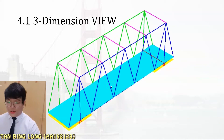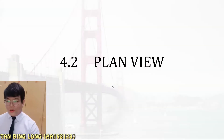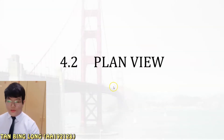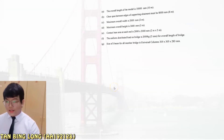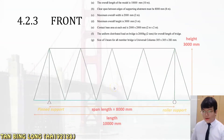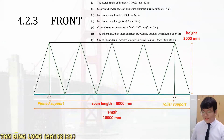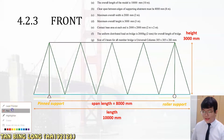We will look at it in the AutoCAD explanation. First, we look at the plan view. This is our group front view build, which looks like that.